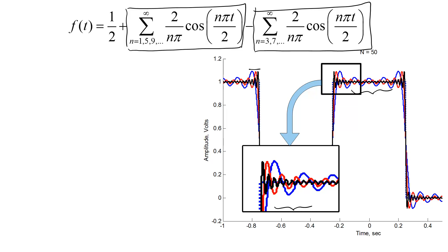So what's up with claiming that these two things are equal? The answer is that Mr. Fourier means something different by his equal sign than you might think he means. It's natural to think that he means that the two functions are the same at every point, but that's not true.